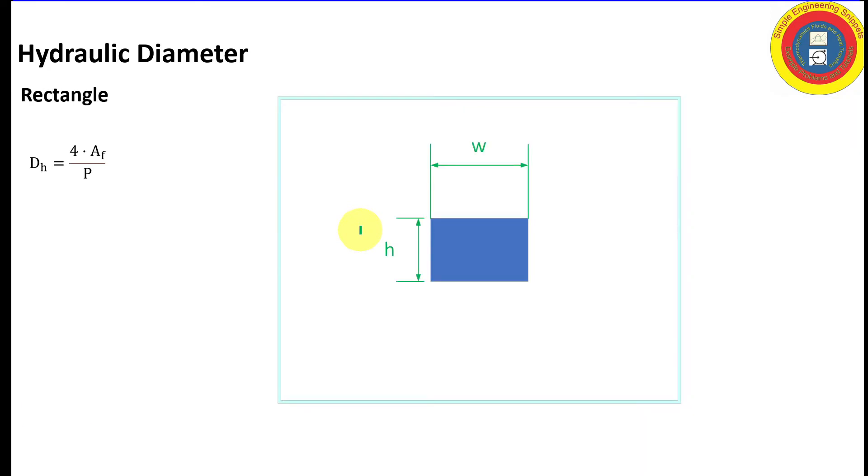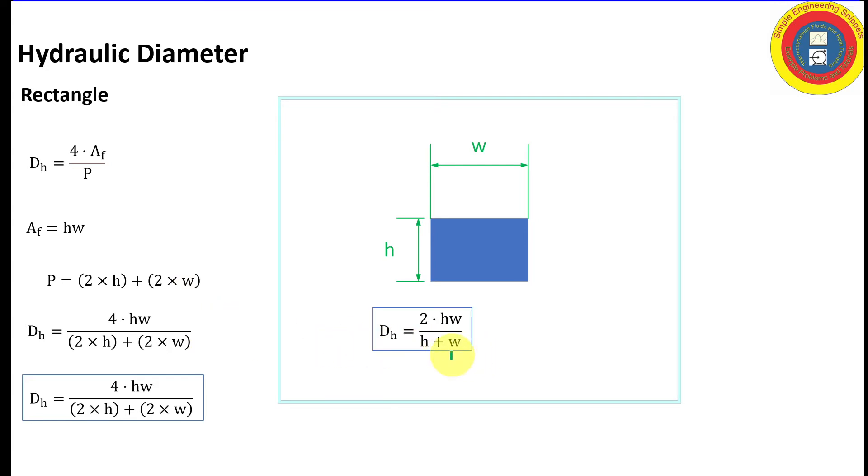Let's move on to something a little bit more interesting. Let's go on with a general rectangle of width w height h. In this case the flow area is h times w and the wetted perimeter is 2 times h plus 2 times w. Plugging that into our equation we get this expression. That can be simplified. And so this is the equation for the hydraulic diameter of a rectangle.